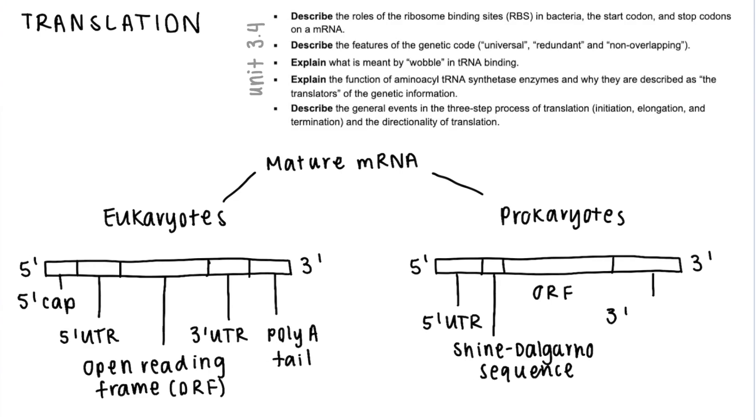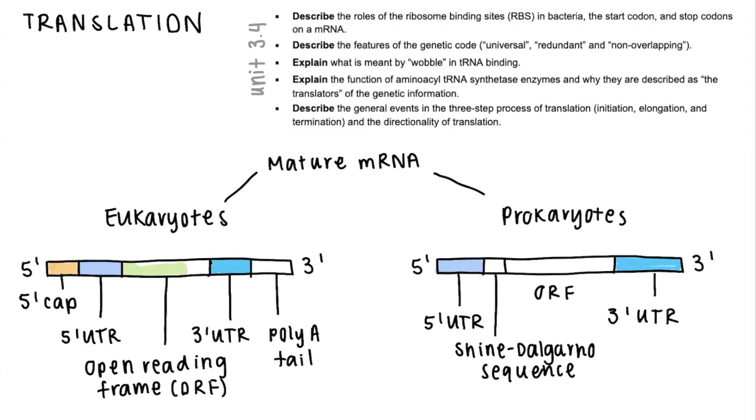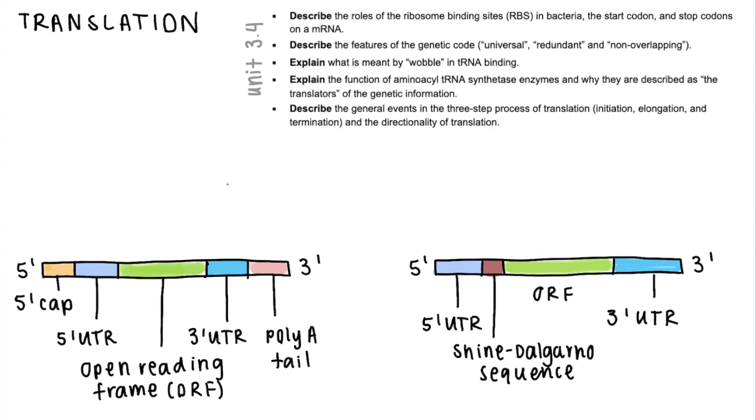In prokaryotes it's much simpler. We still have the untranslated region and the open reading frame and in the middle of that is the Shine-Dalgarno sequence which is what the ribosome is going to bind to to start traveling down the mRNA to look for where to start translating.